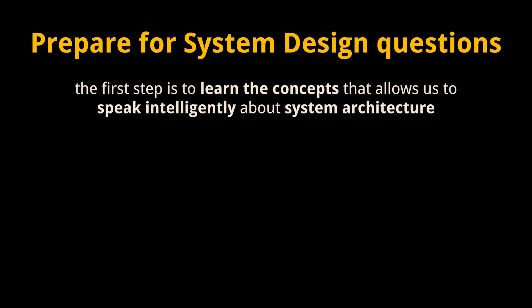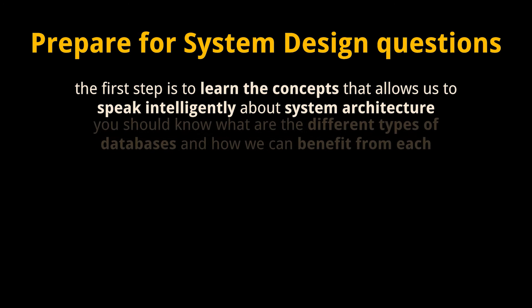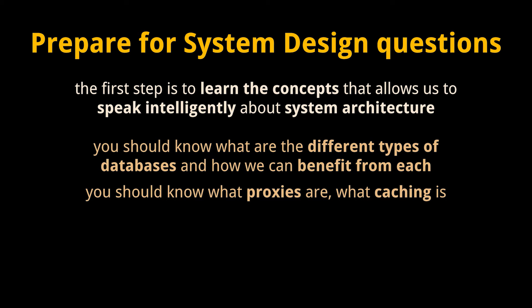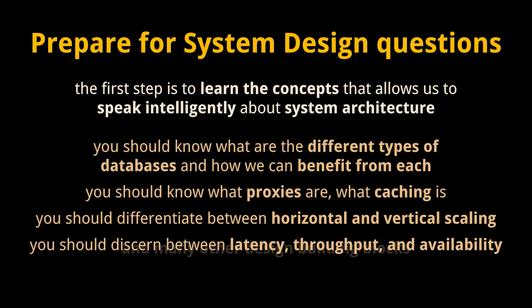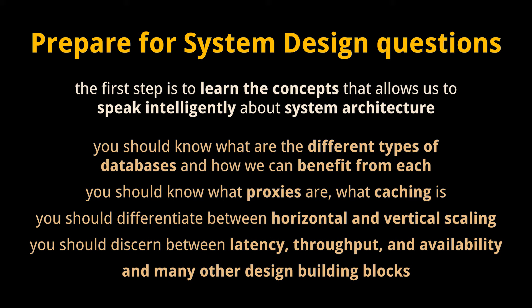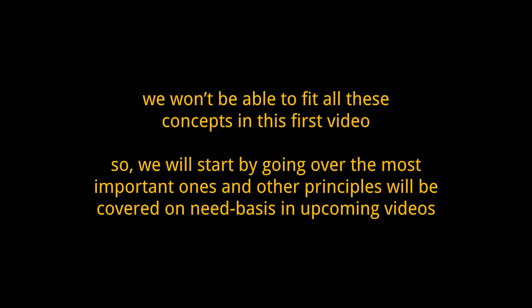Preparing for software design interviews is a long journey and the first step is to learn the concepts, or at least have a basic level of knowledge that allows us to speak intelligently about system architecture. You should have a basic idea of what databases are, the different types of databases, and how we can benefit from each. You should know what proxies are, what caching is, be able to differentiate between horizontal and vertical scaling, know the difference between latency, throughput, and availability, and many other design building blocks. We'll go over the most important ones in the first couple of videos, and throughout the rest of the series, when we find the need to make use of a new concept, we will cover it on the spot.